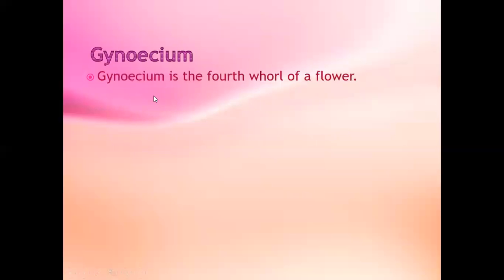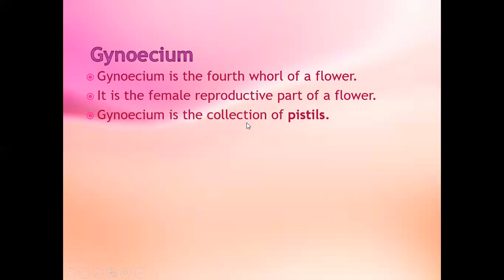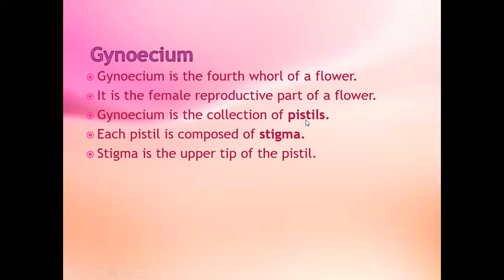Gynoecium. Gynoecium is the fourth wall of a flower and is the female reproductive part of a flower. Gynoecium is the collection of pistils. Each pistil is composed of a stigma, and the stigma is the upper tip of the pistil.